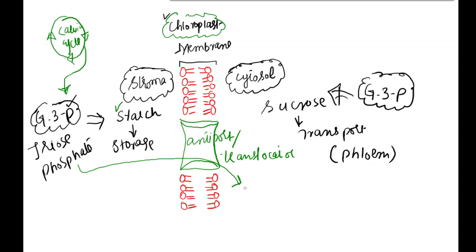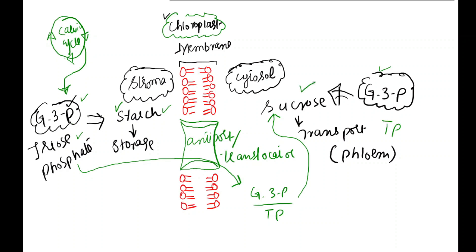In the cytosol, glyceraldehyde-3-phosphate — also called triose phosphate — is ultimately converted into sucrose. So we will study how starch and sucrose are each formed from glyceraldehyde-3-phosphate and triose phosphate.